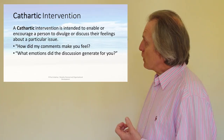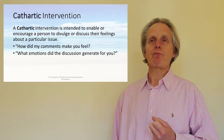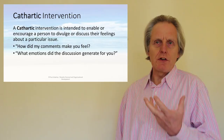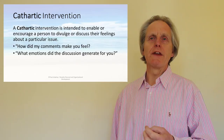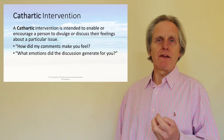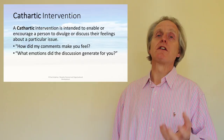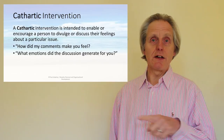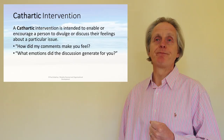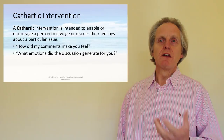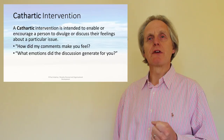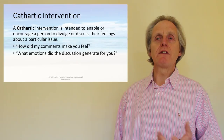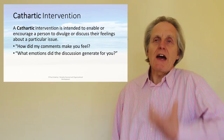The next intervention is cathartic. These interventions are really helpful when you're trying to get someone to learn from their feelings or work through their feelings. If someone gets into disorientation on the adult learning cycle, cathartic interventions can be very useful. It's about enabling or encouraging a person to divulge or discuss their feelings. Examples: 'How did my comments make you feel?' or 'What emotions did the discussion generate for you?' — you're asking them to access and share their emotions.